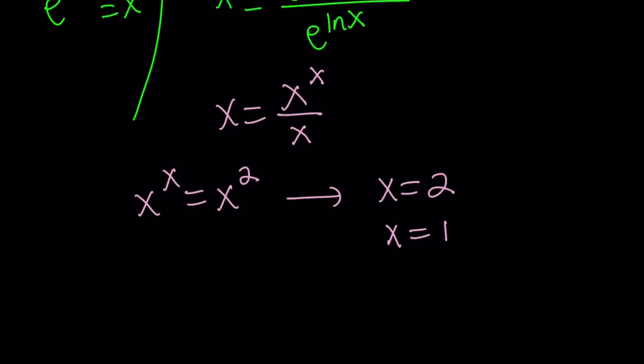How about negative 1? Well, let's go ahead and test it out. Negative 1 to the power negative 1 is negative 1. But negative 1 squared does not equal negative 1. So these two are not equal. Therefore, x equals negative 1 is not the solution.